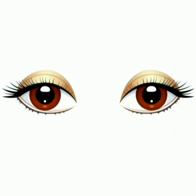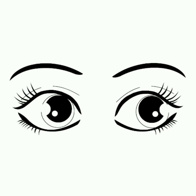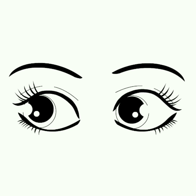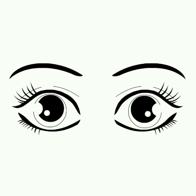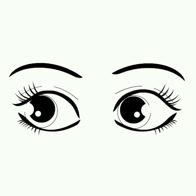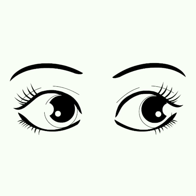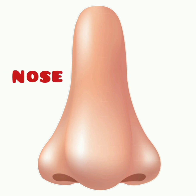Eyes — E, Y, E, S — eyes. Yane aankh. Kids, how many eyes do we have? You are right, we all have two eyes. We see everything with the help of our eyes.